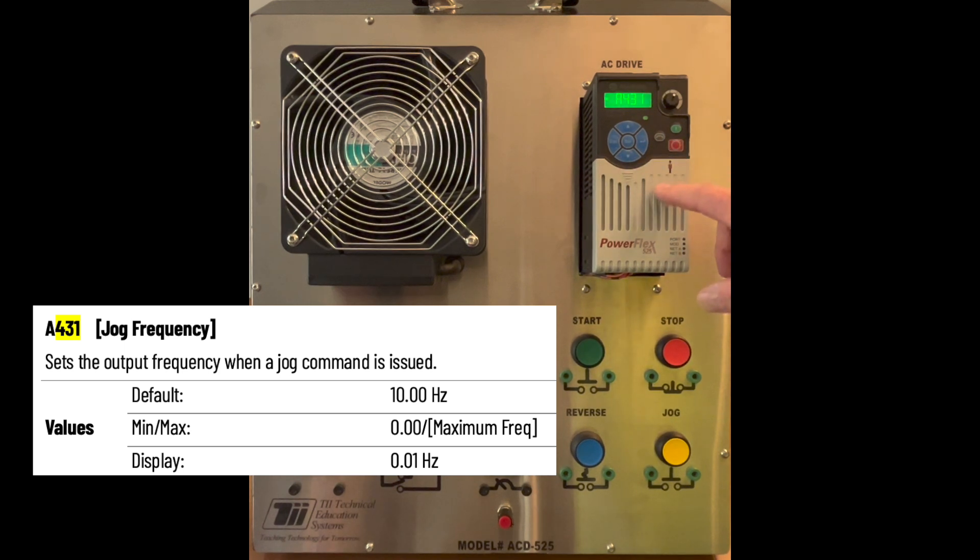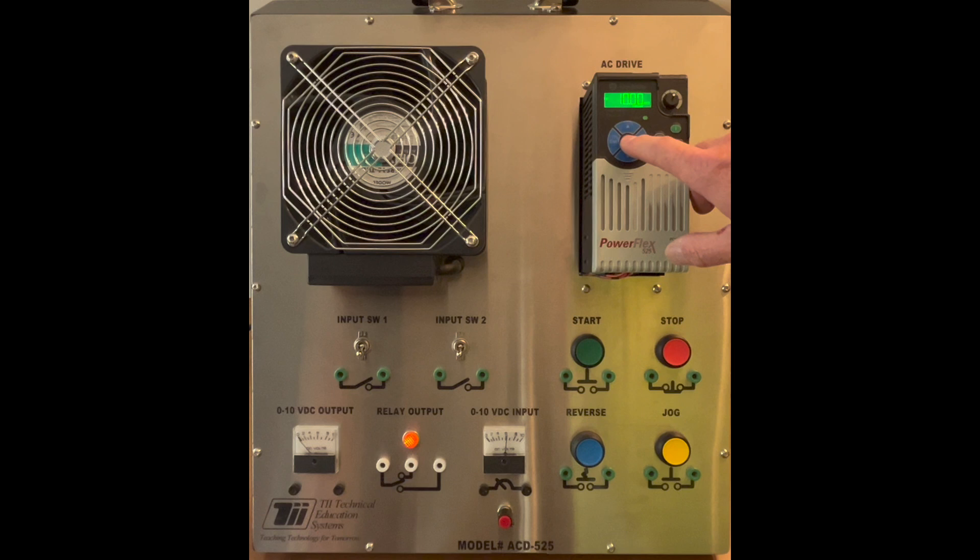You can let it sit here and it'll scroll across just to make sure that's where you want to be. We'll hit the enter button, hit the select button a couple of times, and then hit the arrow up key until you get to the frequency that you want.